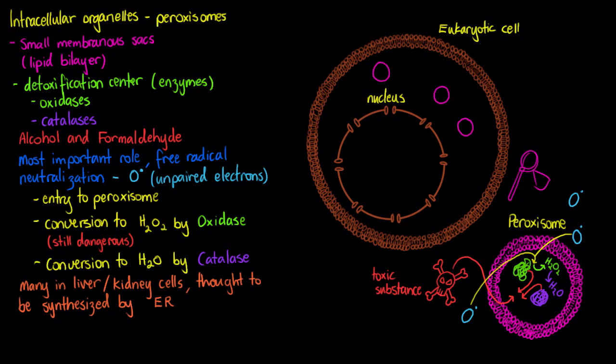But we also have the peroxisomes involved in another job which we'll only talk about very quickly. And that is lipid catabolism. So we're going to be oxidizing long-chain fatty acids through beta-oxidation and that's going to be happening within our peroxisome as well.